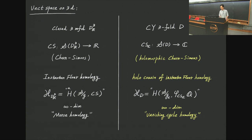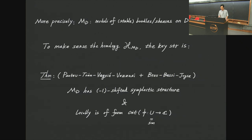In the complexification case, we consider Calabi-Yau three-folds, and we know there is a holomorphic Chern-Simons functional. There is a holomorphic analog of instanton Floer homology, which roughly speaking is the infinite-dimensional version of the vanishing cycle sheaf homology associated with this complex-valued function. But this is an infinite-dimensional case, so to make sense of the right-hand side we need to be more precise.